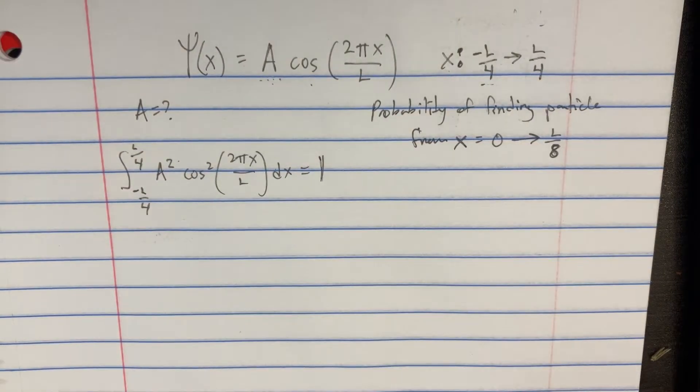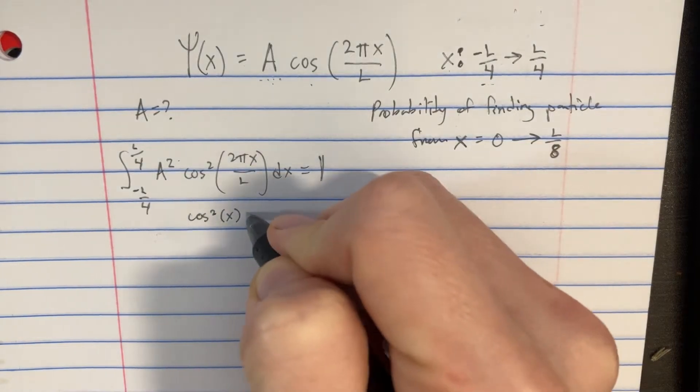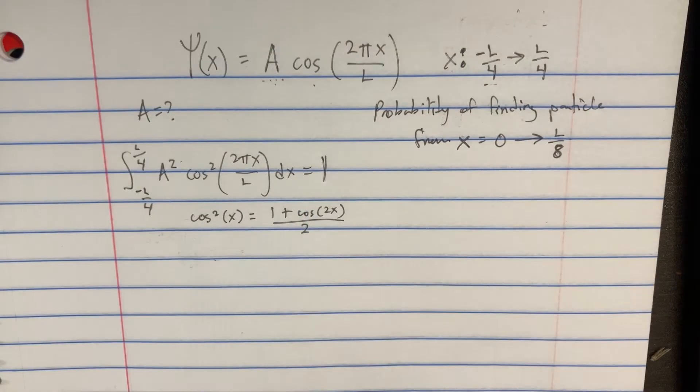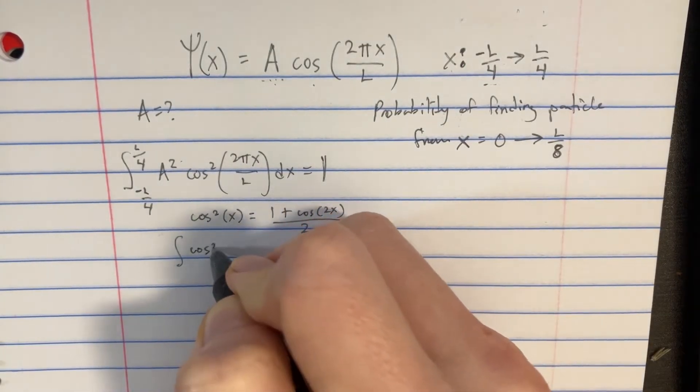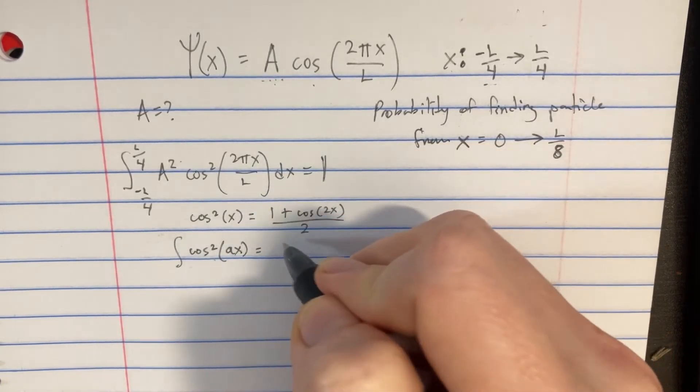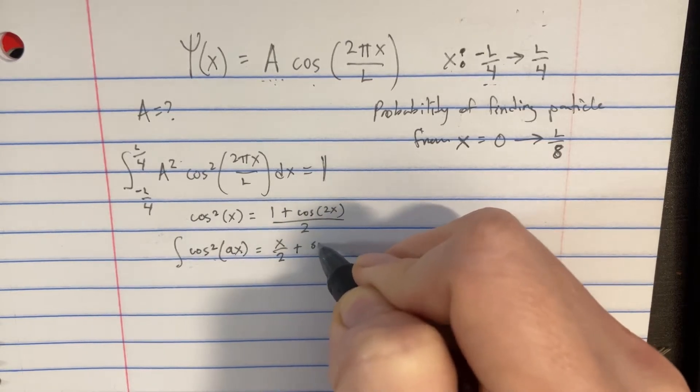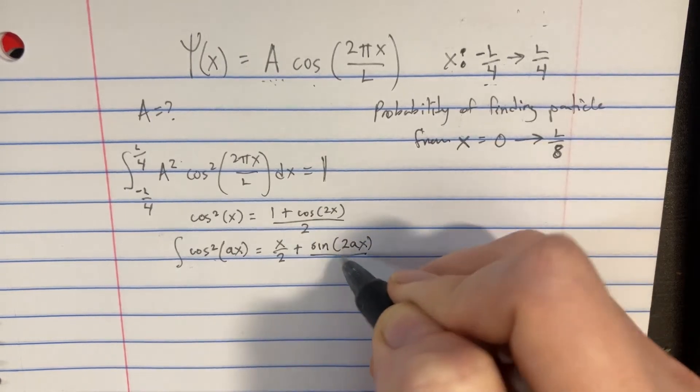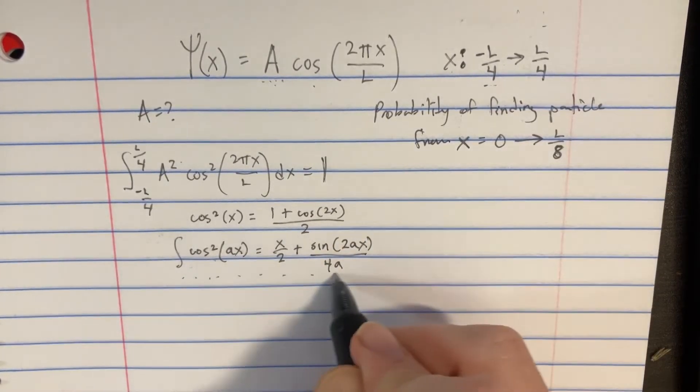In order to solve this, we could use the idea that cosine squared of x is going to be equal to 1 plus cosine of 2x divided by 2. But we also have an integral table that says that the integral of cosine squared of ax is going to be equal to x over 2 plus sine of 2ax divided by 4a. So this is going to be the faster approach.